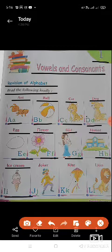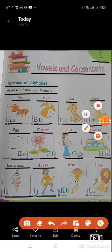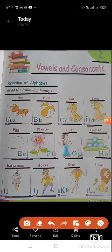Next is ice cream. I-e-ice cream. Next is joker. J-j-joker. What is the sound of j? J-j-joker. Okay students. Next is kite. Sound of k. K-k-kite.